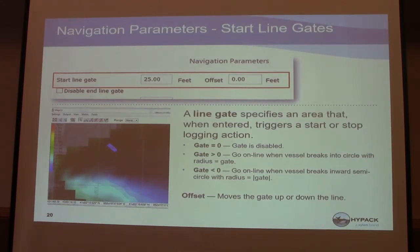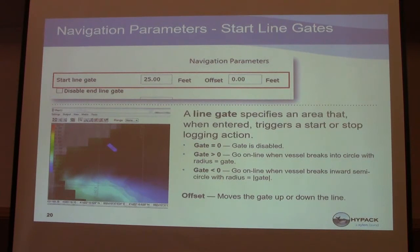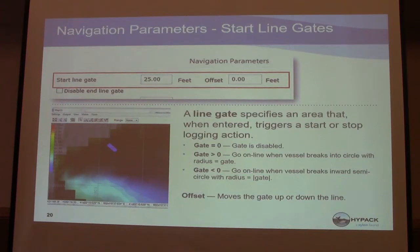If you want to start right when you enter into the channel, use a negative start line gate. A negative 25-foot gate means a 25-foot radius. If it's negative 1, it's not one foot inside the channel — it's a one-foot radius. How good is your boat driver? You'd have to be within one foot of your planned line beginning point to automatically start logging. Most people can hit plus or minus 10 feet, so a negative 10 is typical.